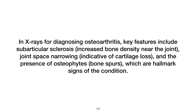What should be looked for in X-rays when diagnosing osteoarthritis? In X-rays for diagnosing osteoarthritis, key features include subarticular sclerosis (increased bone density near the joint), joint space narrowing (indicative of cartilage loss), and the presence of osteophytes (bone spurs), which are hallmark signs of the condition.